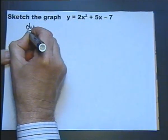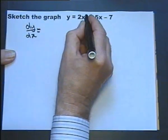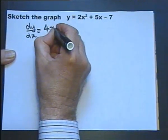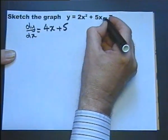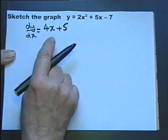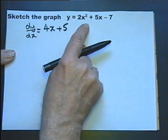So dy dx equals 4x to the power 1. That will differentiate to be plus 5. And that will differentiate to disappear. This is the gradient anywhere on this graph.